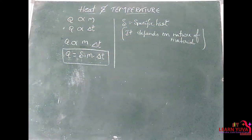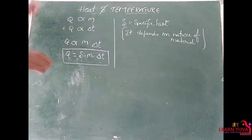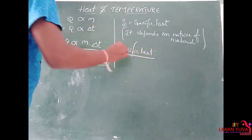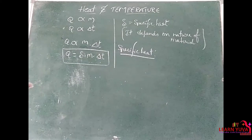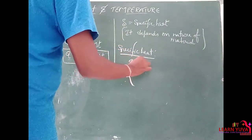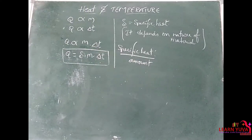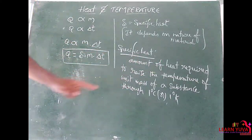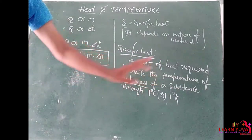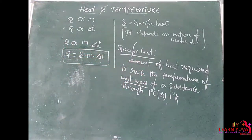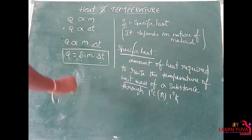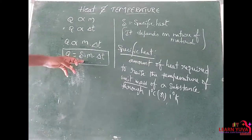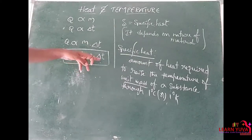Specific heat can be defined as the amount of heat energy required to raise the temperature of unit mass of a substance through 1 degree Celsius or 1 degree Kelvin. So the heat energy required equals specific heat capacity S times mass m times change in temperature delta T.